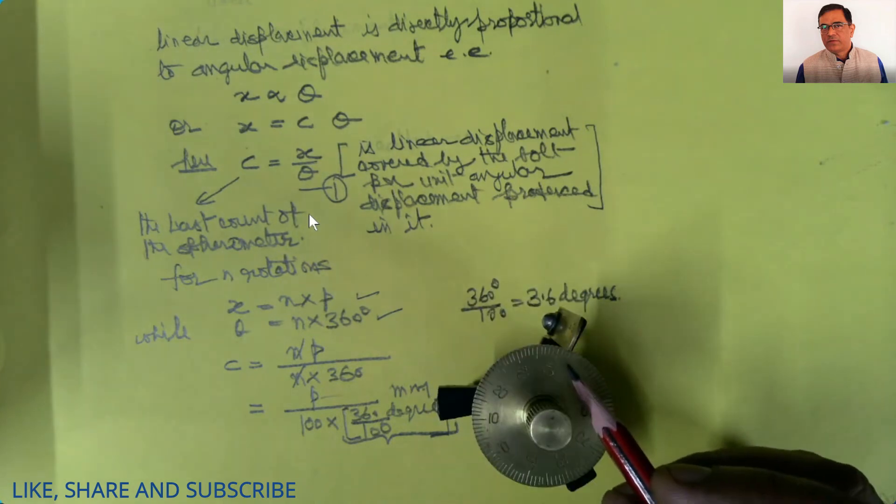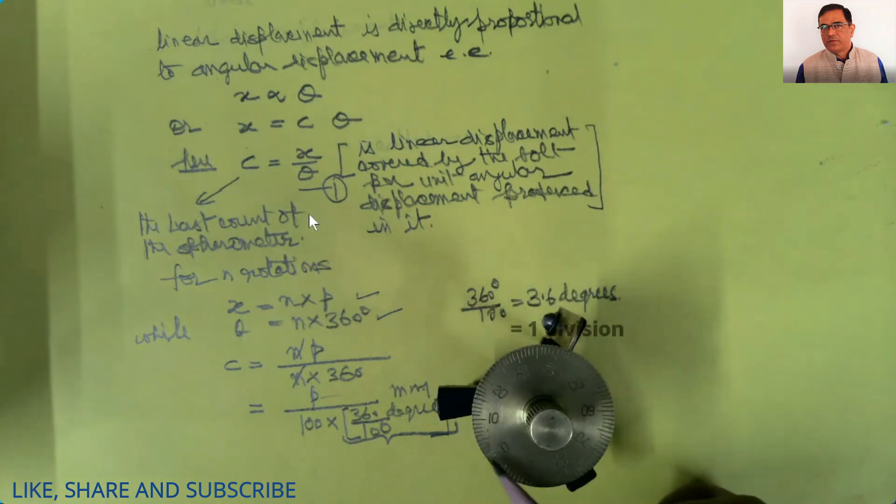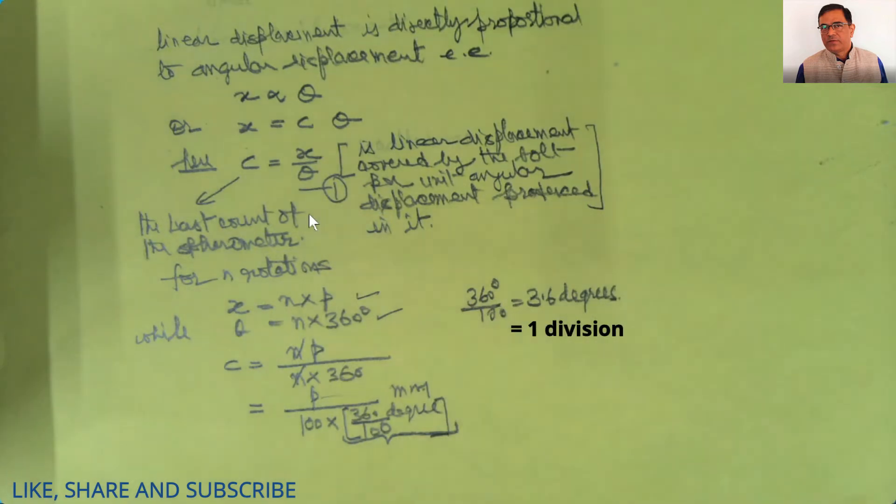As you already know, 360 degrees corresponds to 100 divisions, and hence one division corresponds to 3.6 degrees. That is why the term in brackets can be rewritten as one division. So this can be written as p divided by 100 millimeters per division.